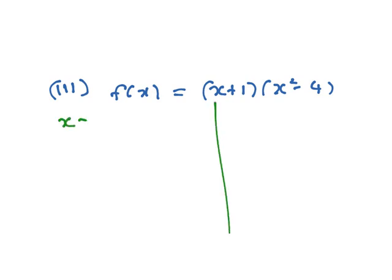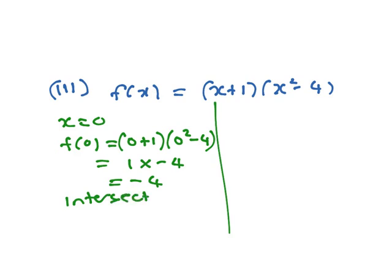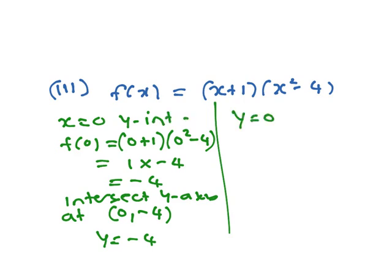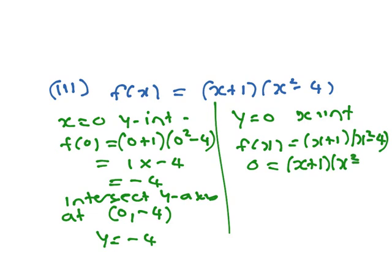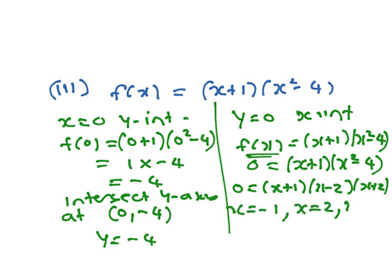Looking at this one, when x equals 0, f(0) equals (0 plus 1)(0 squared minus 4), which is 1 times minus 4, which is minus 4. So it intersects the y axis at y equals minus 4 — that's the y intercept. When y equals 0, we get the x intercept. So 0 equals (x plus 1)(x squared minus 4), which factorizes to (x plus 1)(x minus 2)(x plus 2). So x equals minus 1, x equals 2, and x equals minus 2. It intersects the x axis at x equals minus 1, 2, and minus 2.